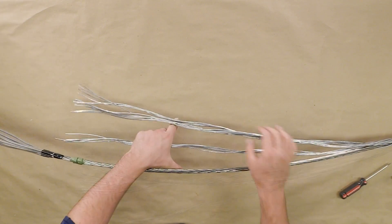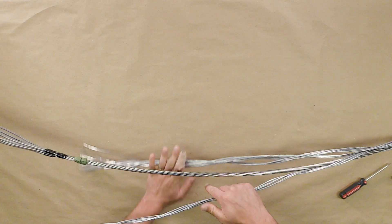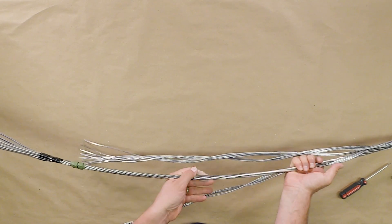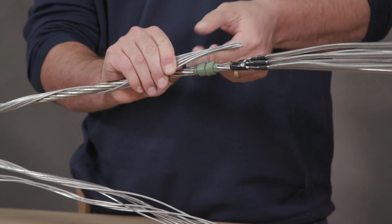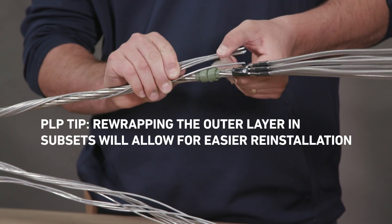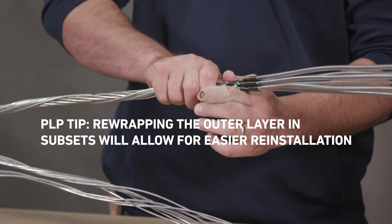Re-wrap the outer layer over the sealant. Be sure to space strands evenly around the sealant. PLP tip: Re-wrapping the outer layer in subsets will allow for easier re-installation.